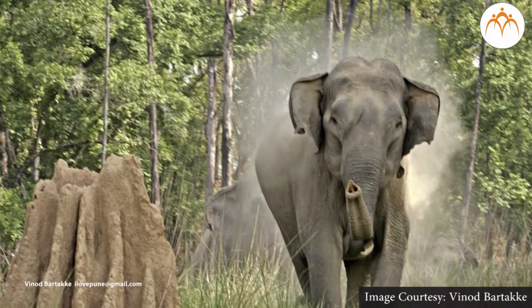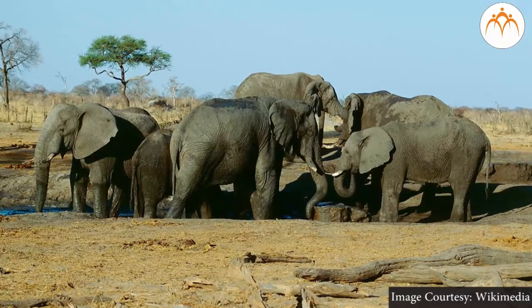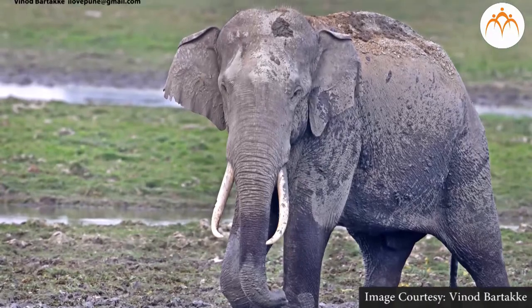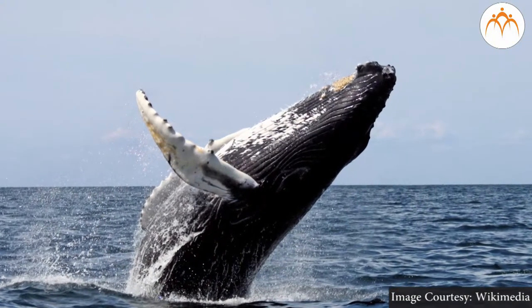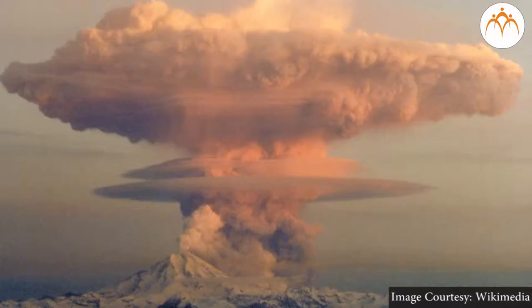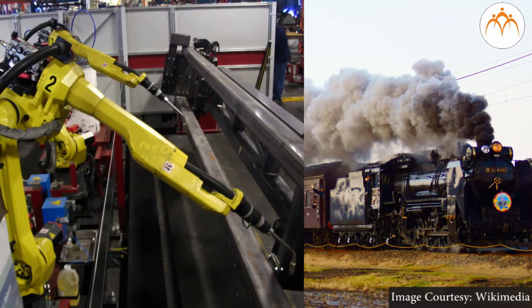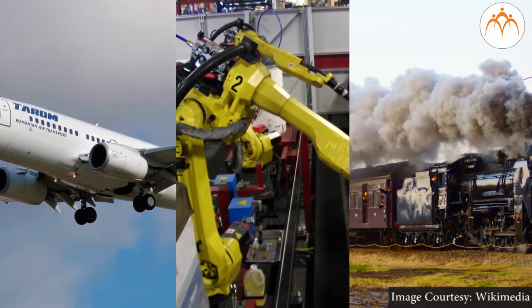Elephants produce infrasound waves that travel through solid ground and are sensed by other herds using their feet, although they may be separated by hundreds of kilometers. Whales and other animals are known to use infrasound for communicating over large distances. Some sources of man-made infrasound are nuclear and chemical explosions, engines, machinery, and aeroplanes. Infrasound is capable of transmitting over large distances.